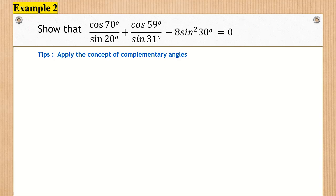For this example, we are going to apply the concept of complementary angles to show that cosine 70 degrees divided by sine 20 degrees, plus cosine 59 degrees divided by sine 31 degrees, minus 8 sine squared 30 degrees is equivalent to zero.